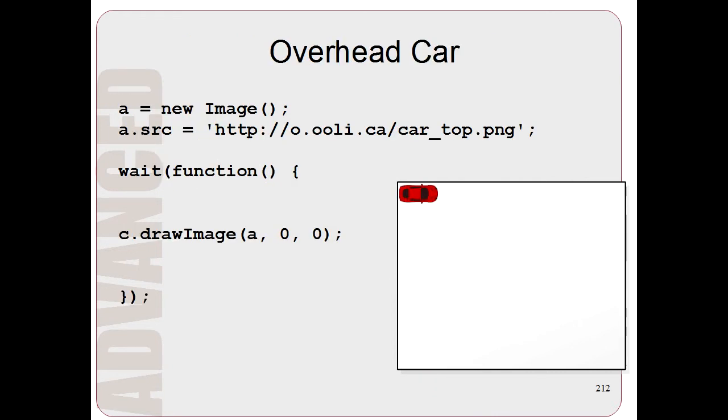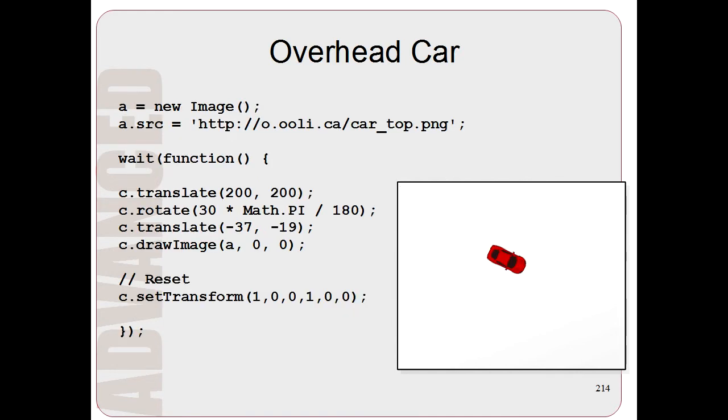So let me give you another example. Here's some code for drawing a car from an overhead perspective. So here we load the picture of a car and we just draw it to the screen. And notice that the car just faces to the right like that. Let's say we wanted to move the car down to over here and rotate it so that it's pointed in this direction. How do we do that with affine transformations?